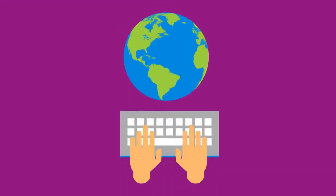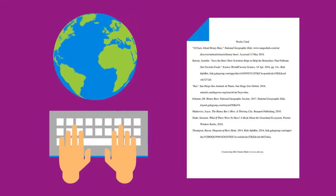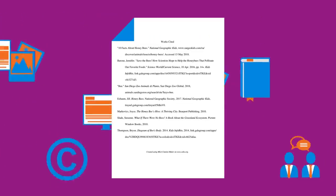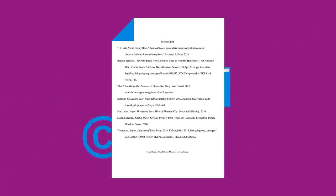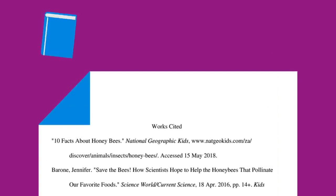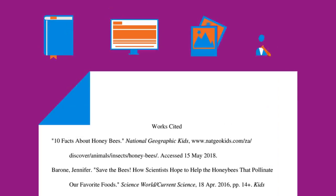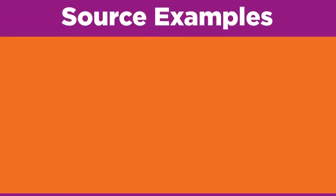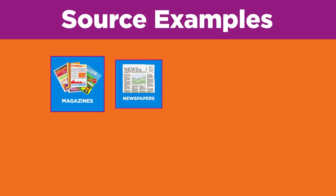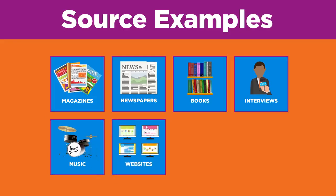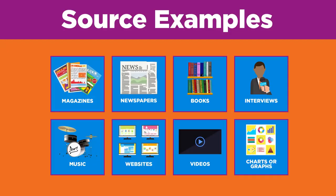When you do research for a paper or project, you need to cite or document your sources. Your sources are the materials in which you found the information that you used. It does not matter what type of source it is — it can be in print or online, an image or a conversation, copyrighted or not. Some examples of sources are magazines, newspapers, books, interviews, music, websites, videos, charts or graphs — I could go on and on, but you get the idea.